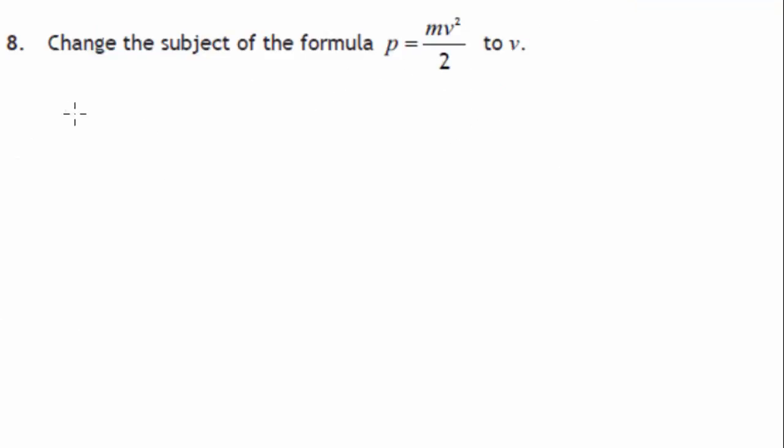So the first thing I would do, I'll just rewrite this out. So I'll go p equals mv squared over 2. So what I'm going to do here is I want it into v, so I'm going to times both sides by 2. What will happen then is you'll end up with 2p equals mv squared. Now we've got the v here but it's been times by m, so what we then have to do is divide both sides by m.